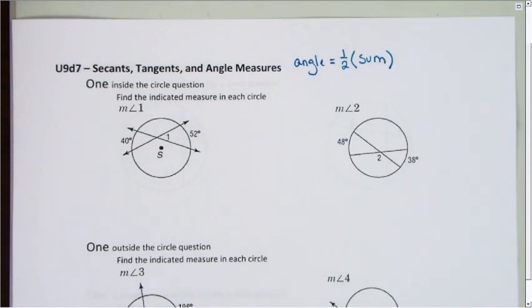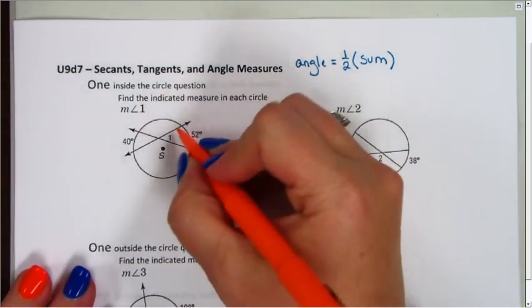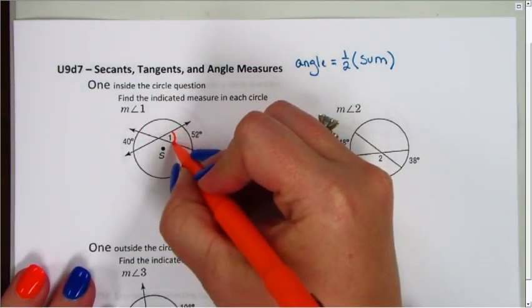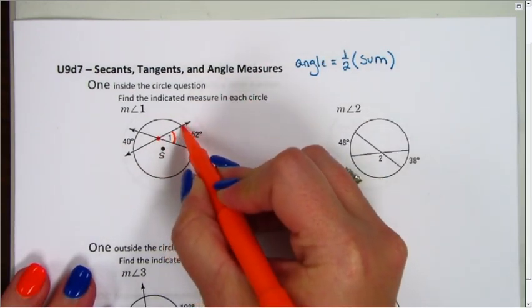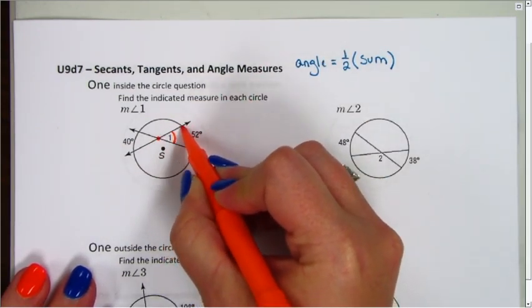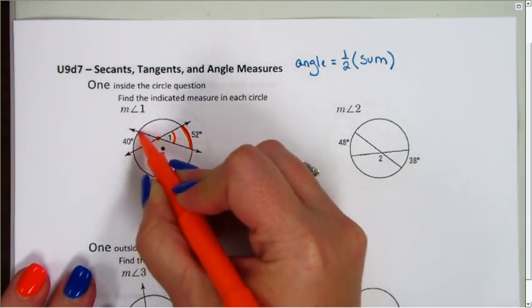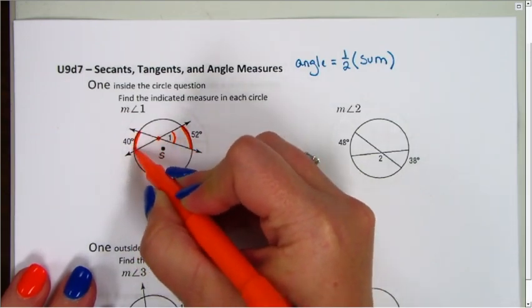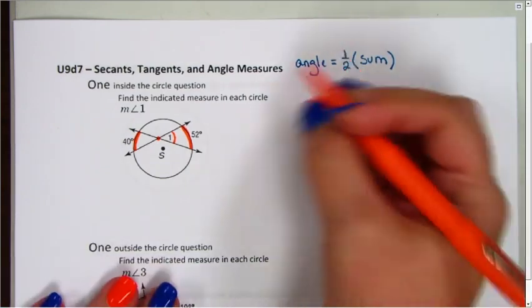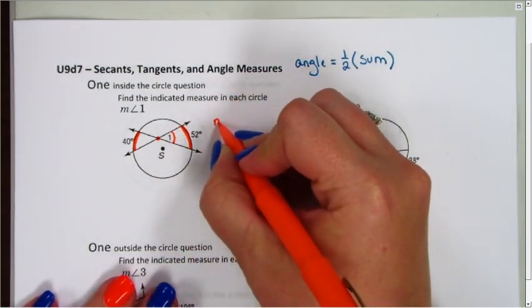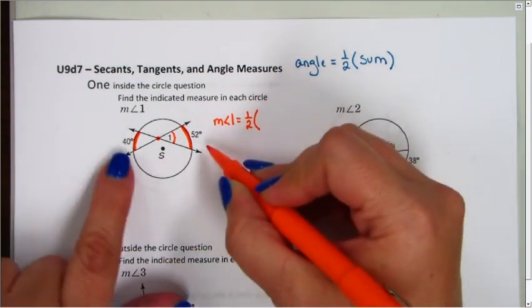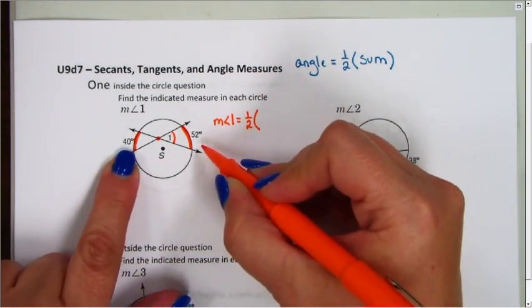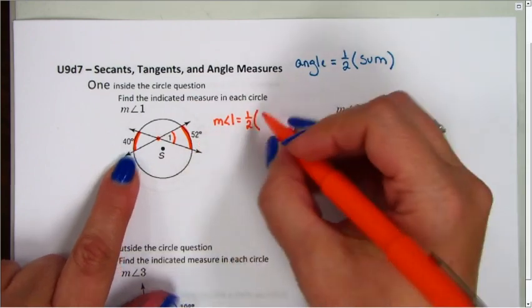So for this one, I can see here is my angle that's inside, and when I come out, my first intercepted arc on one side is 52, and the other intercepted arc on the other side is 40. So that angle, the measure of angle 1 that I'm trying to find, is going to be equal to one-half the sum of the two intercepted arcs, which is going to be 40 and 52.